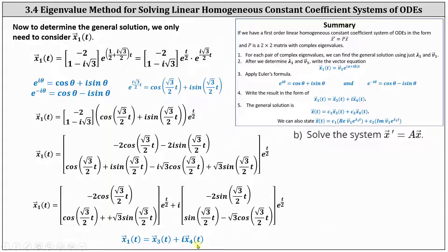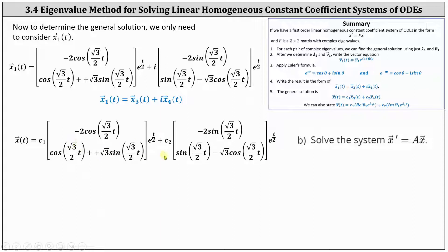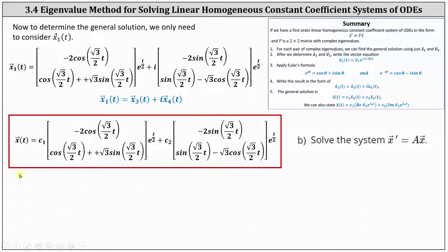We can now state the general solution: x of t equals c one times x three of t plus c two times x four of t. Here we have our general solution. I hope you found this helpful — this is a great example.